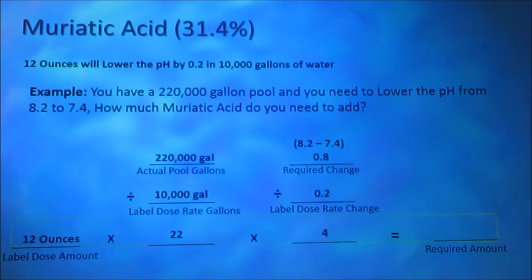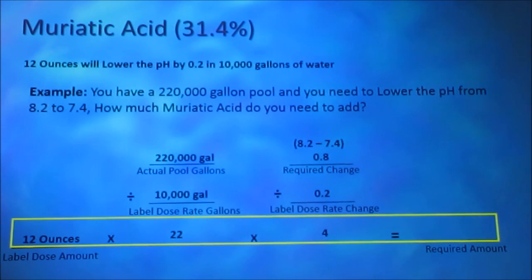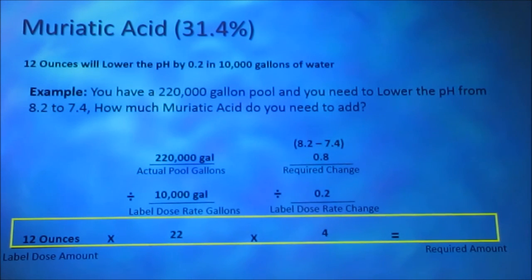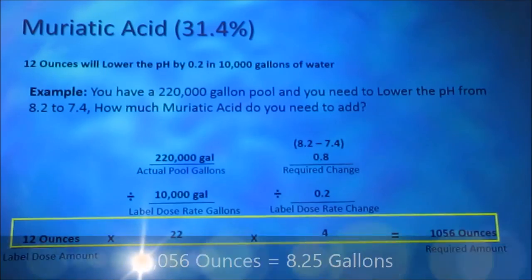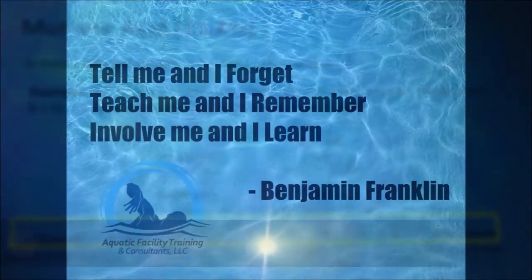We multiply from left to right: 12 ounces, our label dose amount, times 22, the amount of times we have 10,000 gallons of water, times 4, the amount of times we want to decrease the pH by 0.2, equals 1,056 ounces.